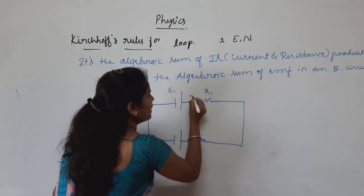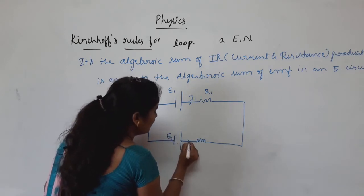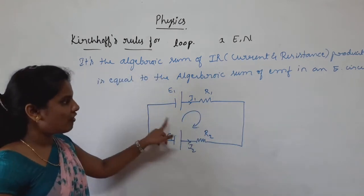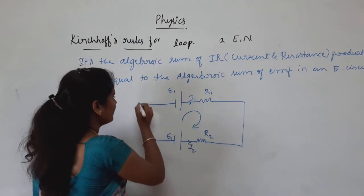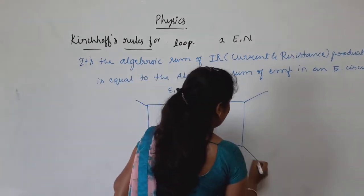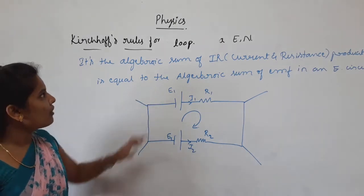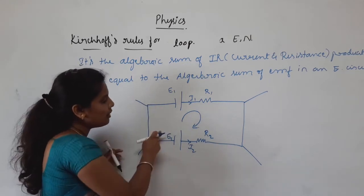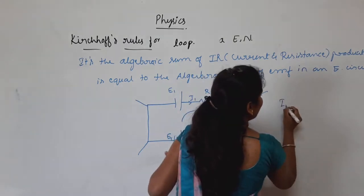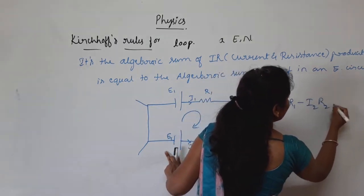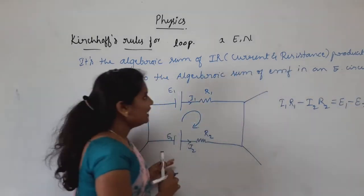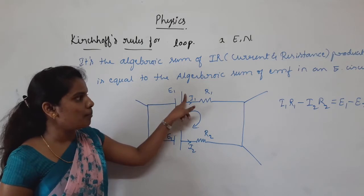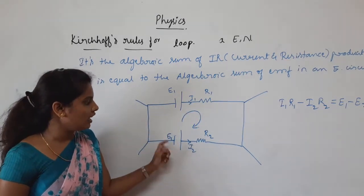For example, in a circuit with E1, R1, I1, I2, and R2, applying Kirchhoff's loop rule gives: I1·R1 minus I2·R2 equals E1 minus E2. The algebraic sum of the product of current and resistance equals the algebraic sum of the EMF.